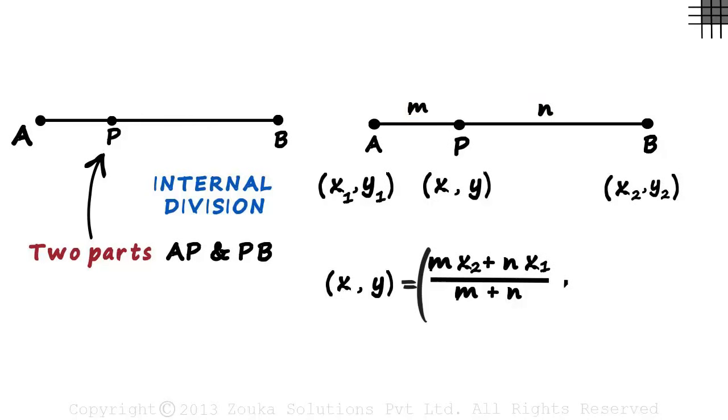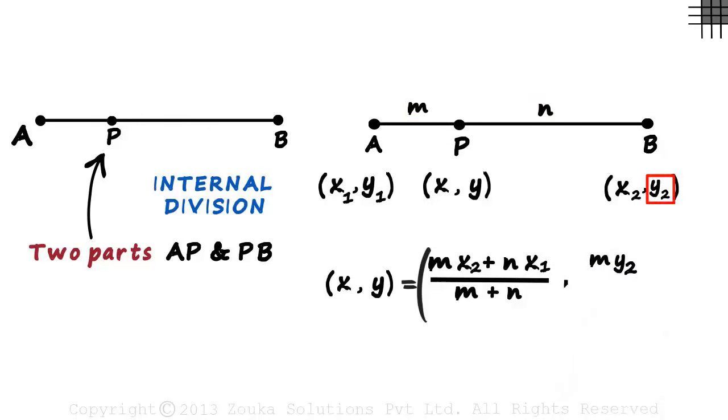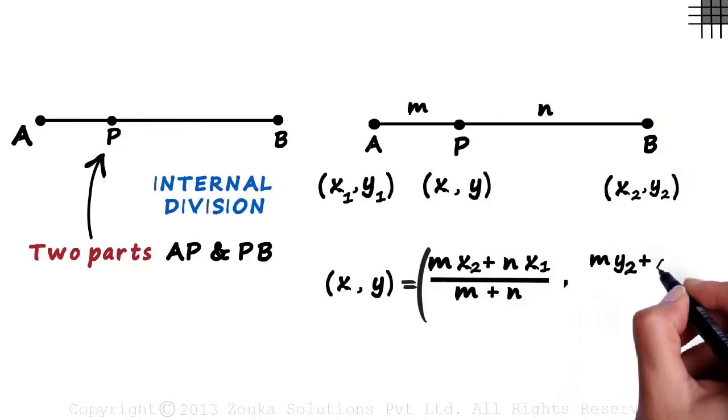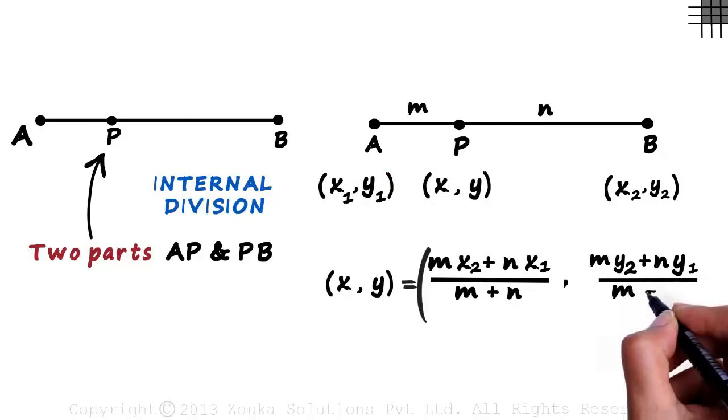Similarly, the y coordinate will equal M multiplied by y2, the y coordinate of this point, plus N multiplied by y1, the y coordinate of this point. And just as we did for the x coordinate, we divide the whole thing by the sum of M and N.